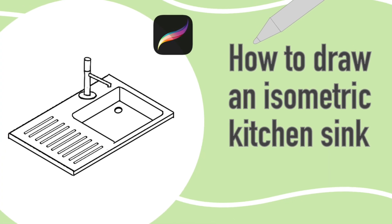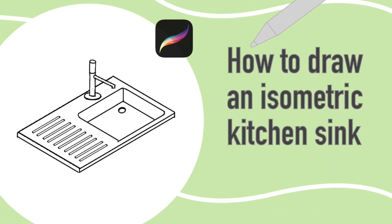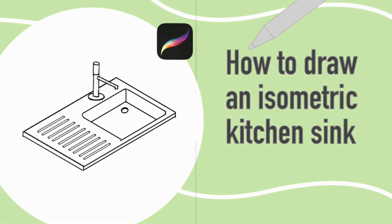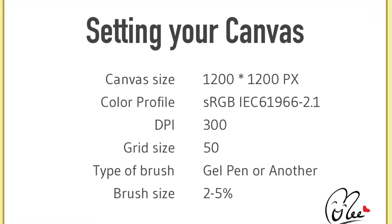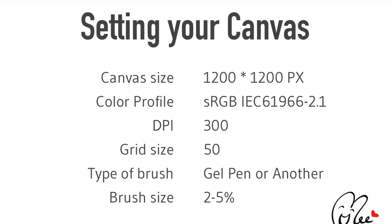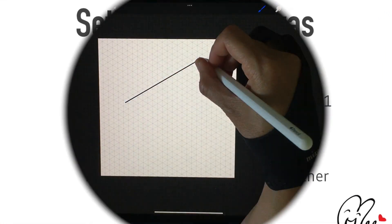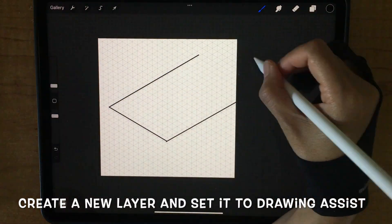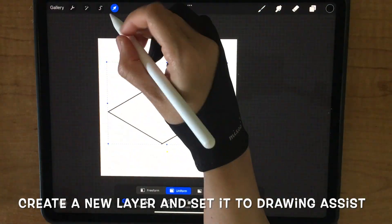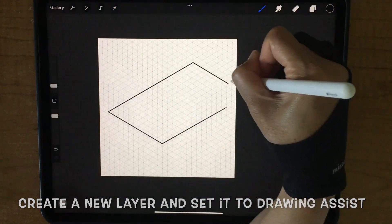How to draw an isometric kitchen sink. First, setting a canvas. Create a new layer and set it to drawing axis.